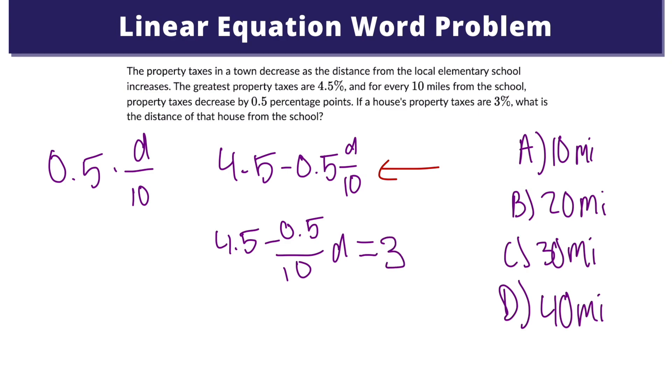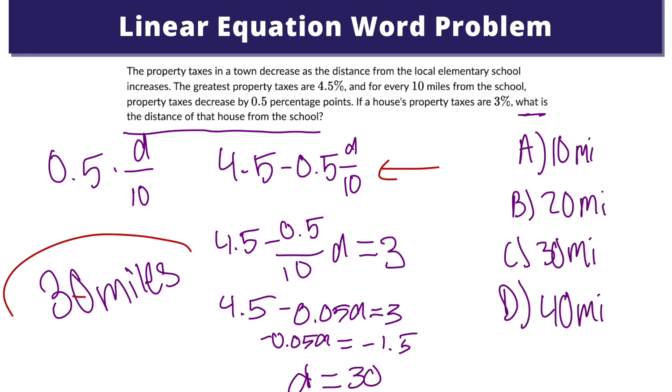And then from there, we can do our division, then isolate our variable. And then from there, we get our answer, which is d equals 30. This tells us that the house is 30 miles away from the school. That answers our question of what is the distance of the house from the school. It is 30 miles.